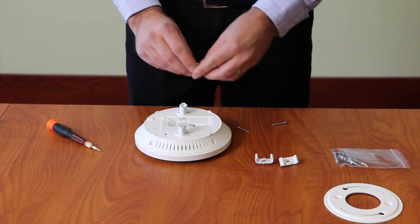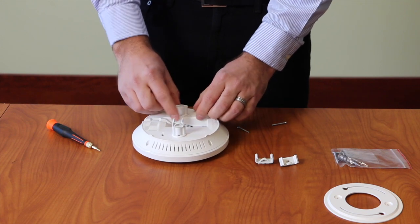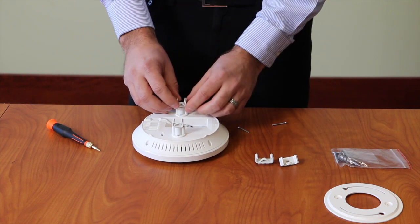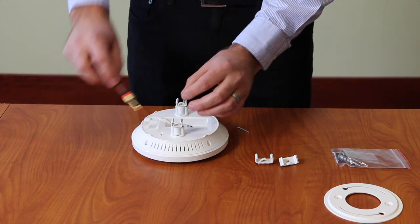A second option is to use the included extenders to give yourself a bit more of a gap between the access point and the ceiling. Just put the extenders in place and then use the longer screw that's included to screw those into place.